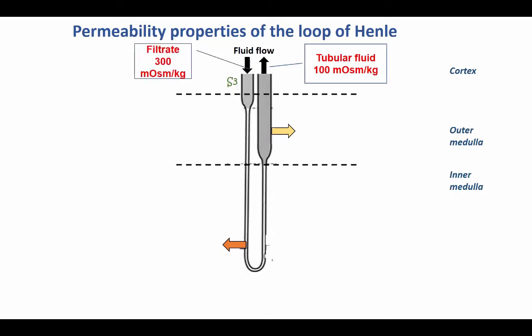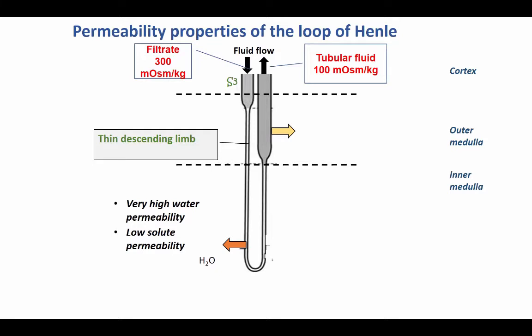The filtrate from the glomerulus that flows into the loop of Henle is going to be isosmotic, as is the fluid of the cortex itself. The descending limb of Henle has a very high water permeability but also a very low solute permeability, which means that water can go out of the tubule while leaving the salts behind. This makes the tubular fluid in the descending limb very concentrated.